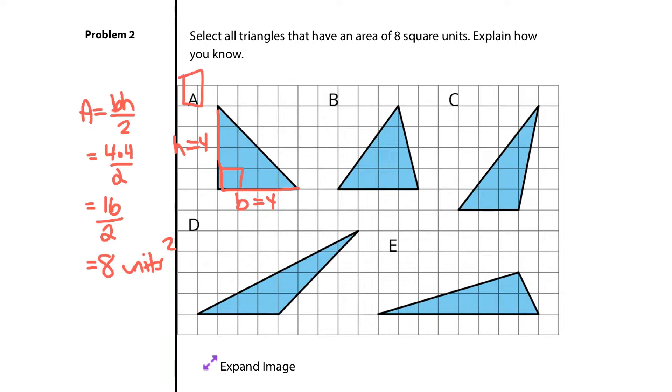In B, I have a base here that I'm going to call 4. And if I look at this parallel line to my base, I can draw in a height straight down here that is also 4. Well, I already solved that right there. And so B will crank out a solution of 8 square units as well.